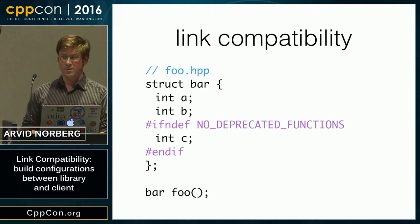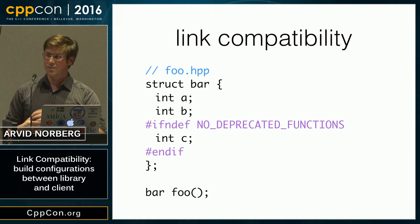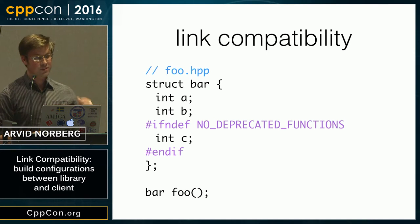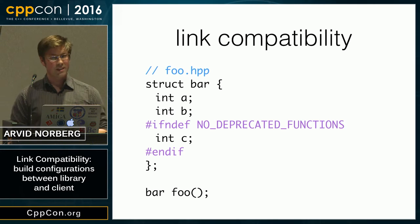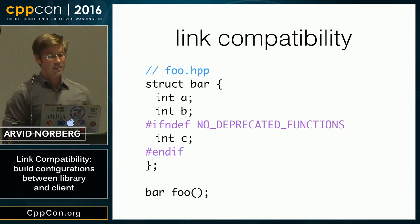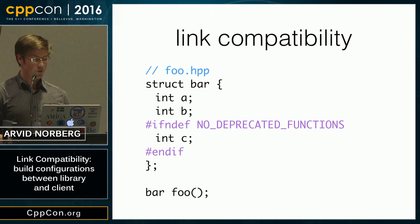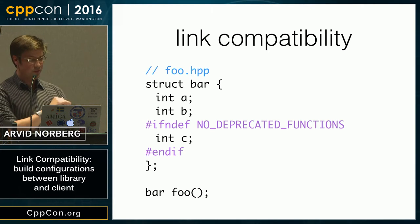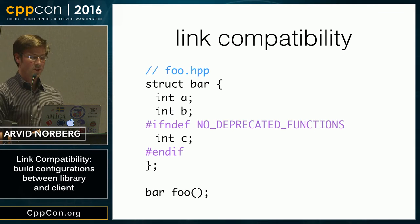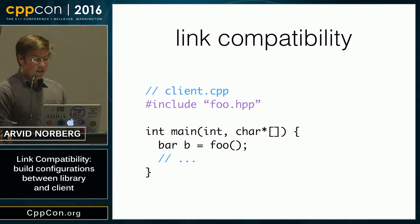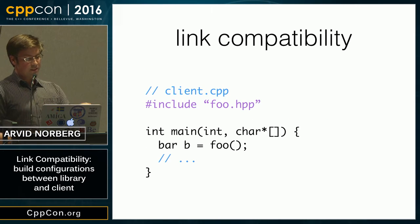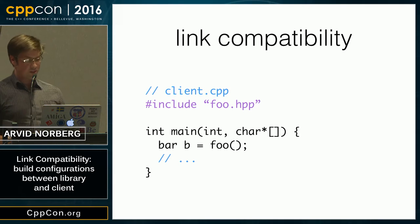Imagine that you have a header for your library that looks something like this. You have a struct, and one of these members was really a mistake to add, so you want to get rid of it. So you #ifdef it under this build configuration option, and then you have a function that returns this. You have a client that includes your header file and calls this function.